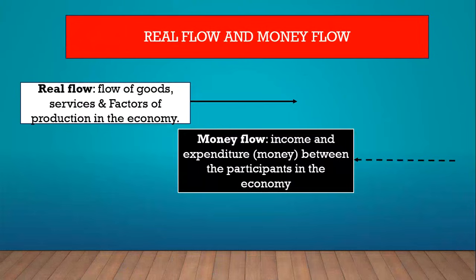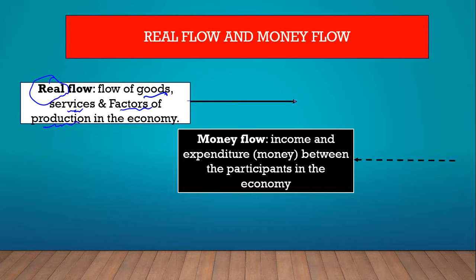We also need to understand the difference between a real flow and a money flow. The real flow refers to three things flowing in the economy: goods, services, and the factors of production. When goods, services, and factors of production are flowing in the economy, that is a real flow, and it is indicated with a solid line on the circular flow diagram.